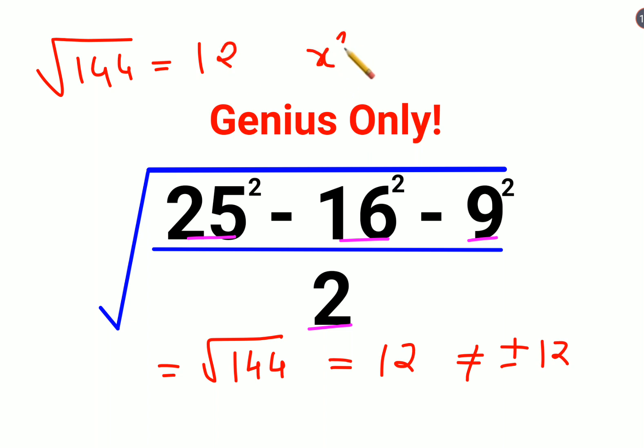But if you had something like x² = 144, then yes, it can be written as x = ±12. Only in case of variable this plus minus situation happens.